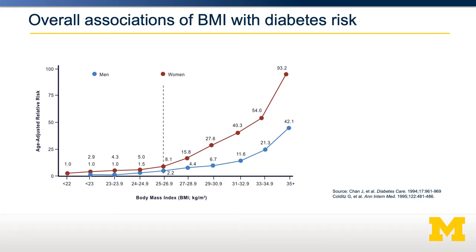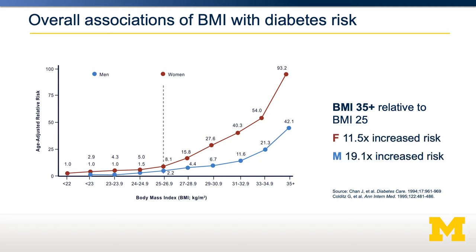Let's look at how obesity connects with diabetes. Here we're looking at obesity as measured by body mass index and how it relates to diabetes risk in both men and women. Women tend to have a higher diabetes risk overall than men. But if we take the relative risk at somebody who is a BMI of 35 and compare it to somebody who is normal weight at a BMI of 25, you can see there's either an 11 or 19-fold increased risk — comparing BMI of 25 to class 2 obesity, which is a BMI of 35 or higher.